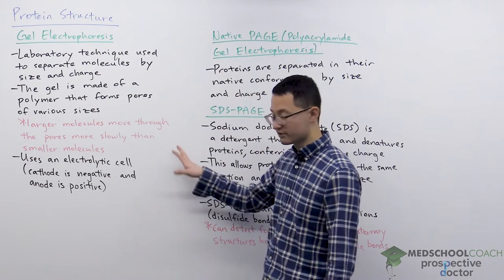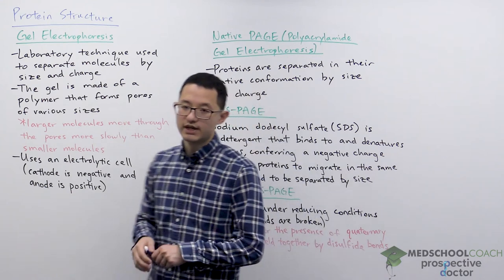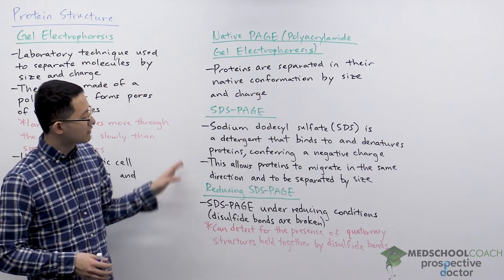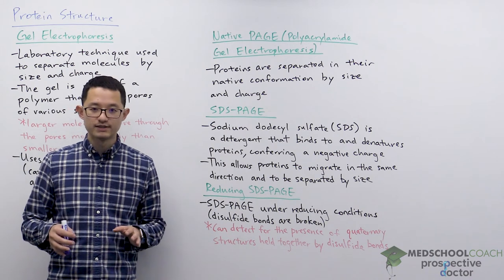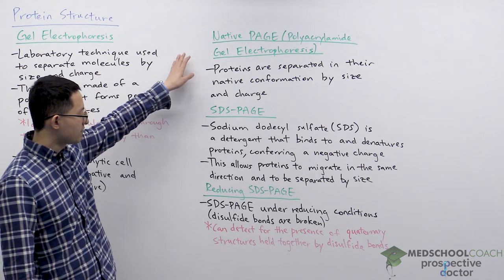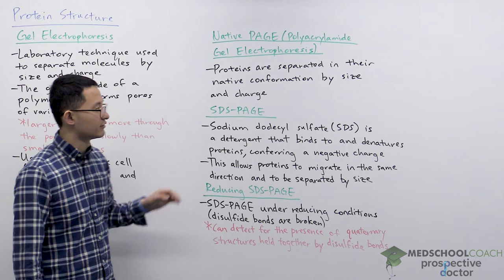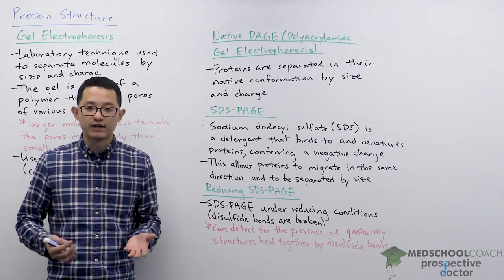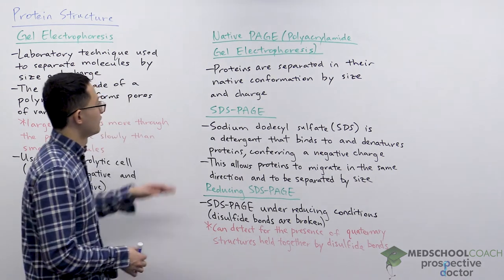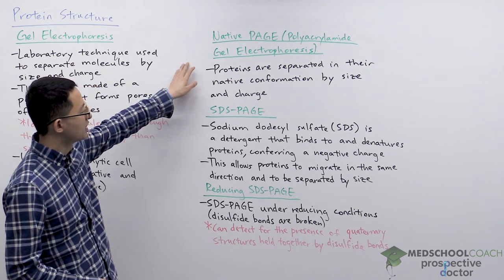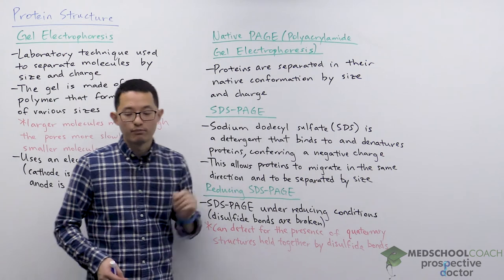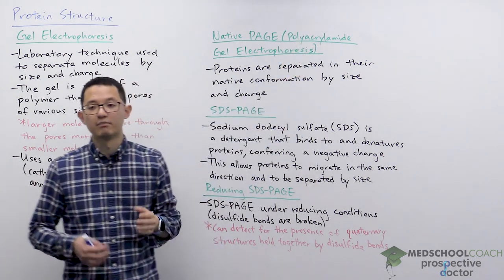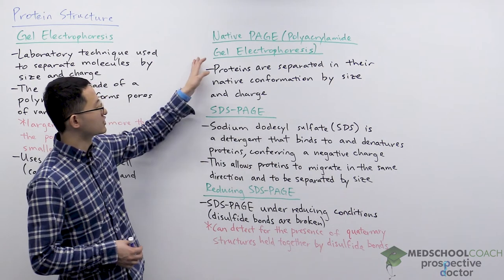Those are the basics of how gel electrophoresis works. For the MCAT we need to know a little more detail about different gels used to separate proteins. There is native PAGE, SDS PAGE, and reducing SDS PAGE. They're all similar in that they all incorporate gel electrophoresis. PAGE stands for polyacrylamide gel electrophoresis, where polyacrylamide refers to the polymer used to make the gel.